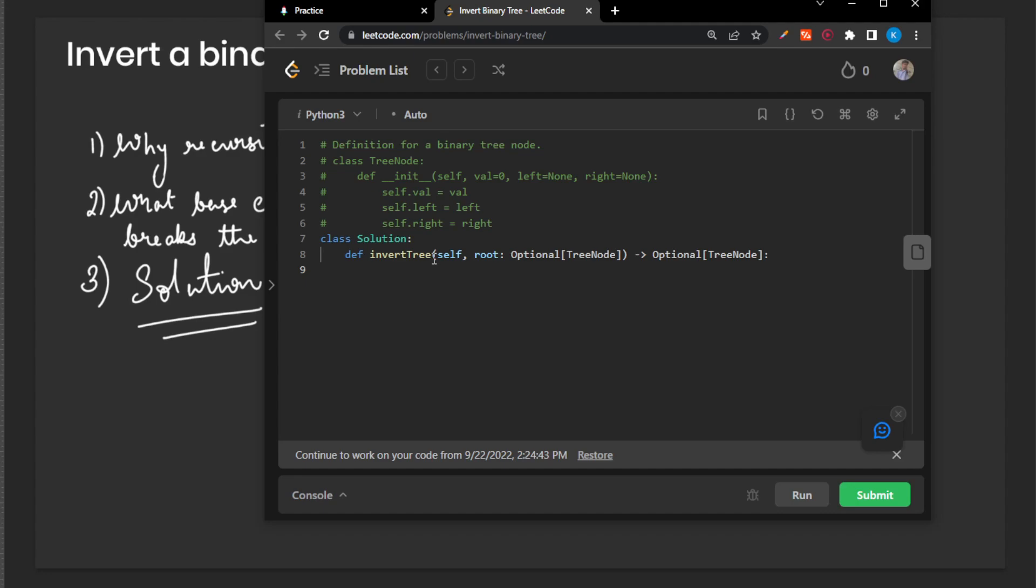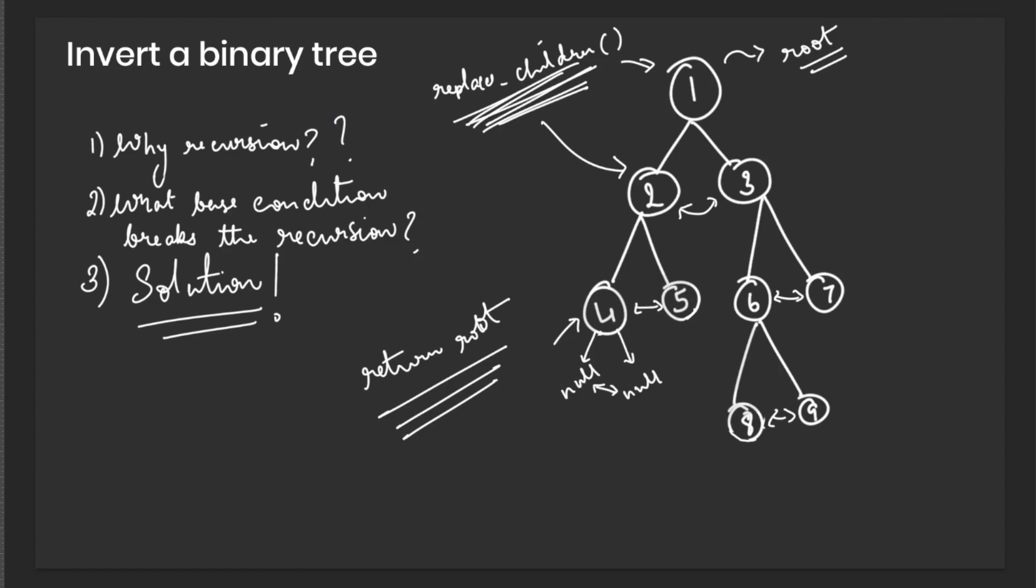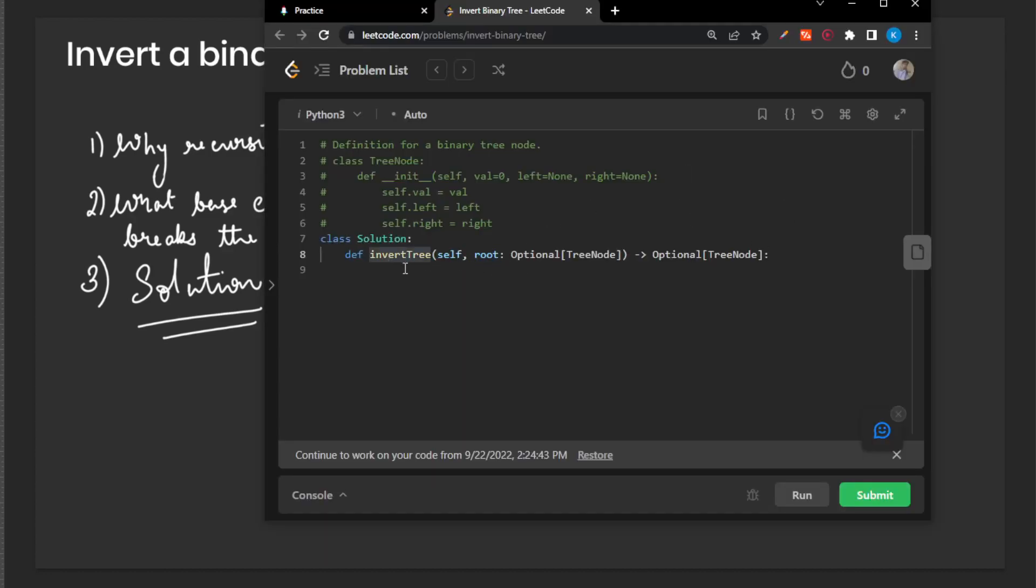We want the recursion to end when the root itself becomes null. For example, when we are giving this null pointer to this function right here, our main solution. So when we are giving a null pointer instead of the root variable or if the root variable is null, we want our recursion to stop.